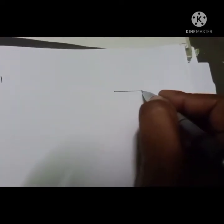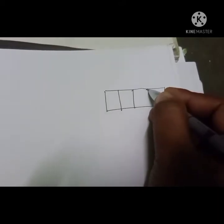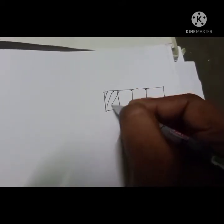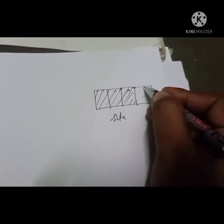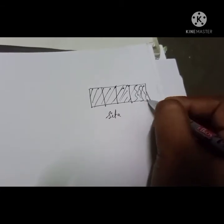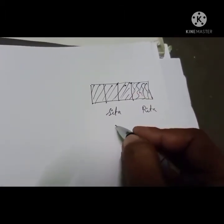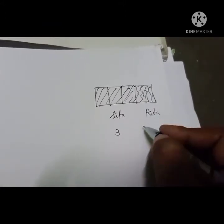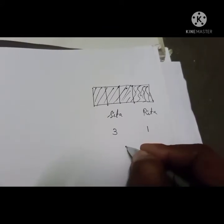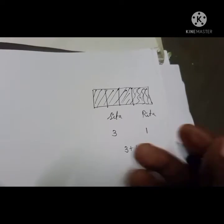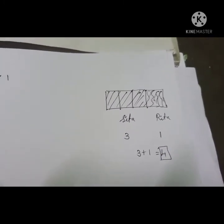For example, there are 4 chocolate bars. Three parts are given to Sita and one part is given to Rita. So the total parts are 3 plus 1 equal to 4. From the total, Sita gets 3 parts and Rita gets 1 part.